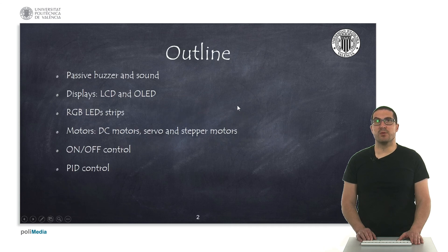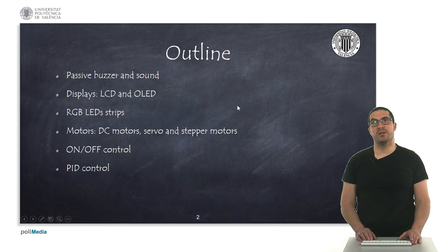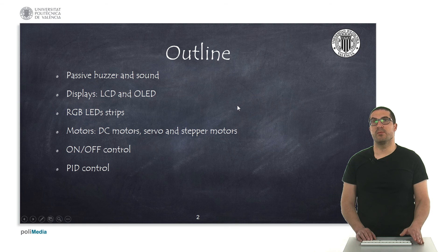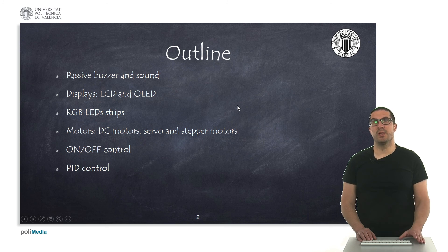This is the outline of our presentation. We are going to introduce the passive buzzer and sound generation, also we are going to talk about displays — the LCD and OLED displays and RGB LED strips. Then we're going to move to motors: DC motors, servo motors and stepper motors. And then we're going to talk about control — two different types, the on-off control and the PID control.